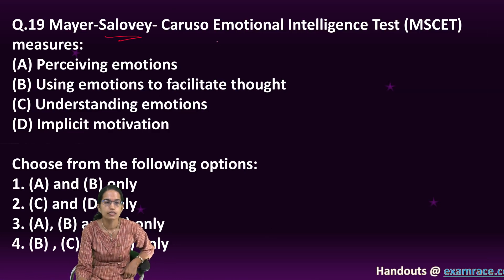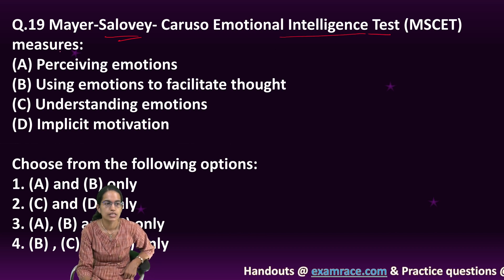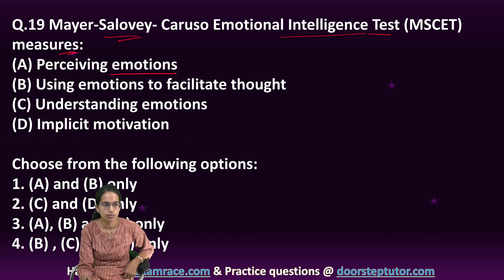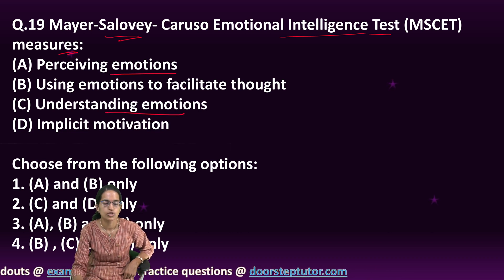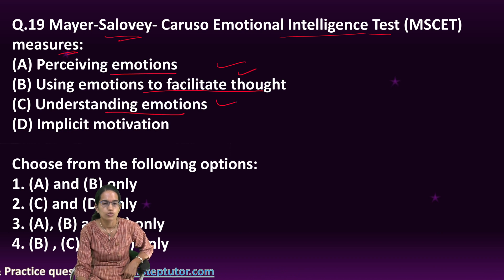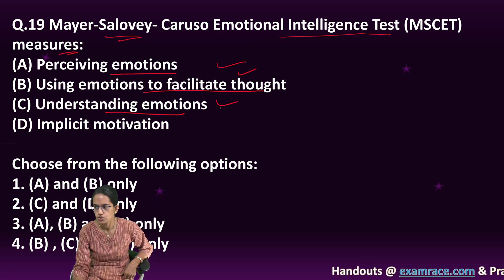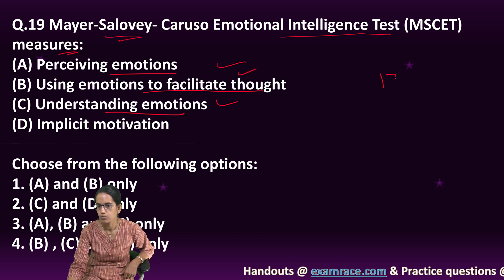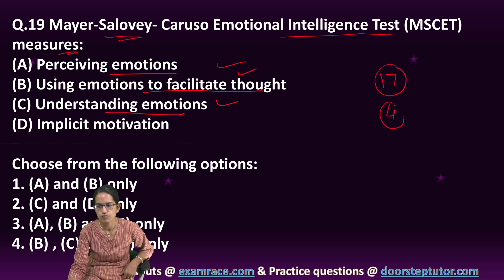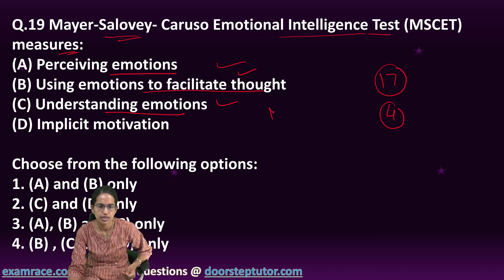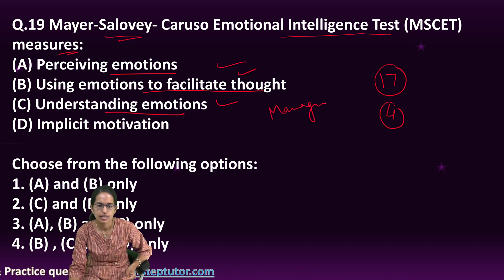The Mayer-Salovey-Caruso Emotional Intelligence Test (MSCEIT) measures the ability to perceive emotions, understand emotions, and use emotions to facilitate thought. It is constructed for individuals above 17 years and measures four components; the one missing from this question is managing emotions — an extremely important detail.